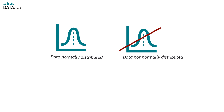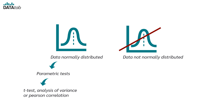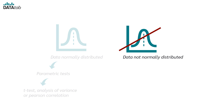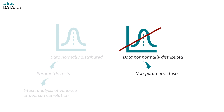if your data is normally distributed, parametric tests are used, such as the t-test, analysis of variance, or Pearson correlation. If your data is not normally distributed, nonparametric tests are used, such as the Mann-Whitney-U test or Spearman's correlation.